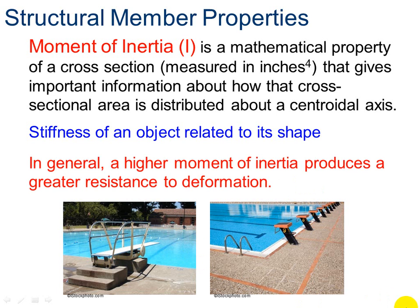In general, a higher moment of inertia produces a greater resistance to deformation. So the higher the moment of inertia, the more likely it is to resist being deformed. So if you look at these two examples, which one is more likely to resist being moved or bent or deformed? This is a springboard, so this will spring back and forth, and this one won't. So this one is more likely to resist being deformed, so it will have a higher moment of inertia.